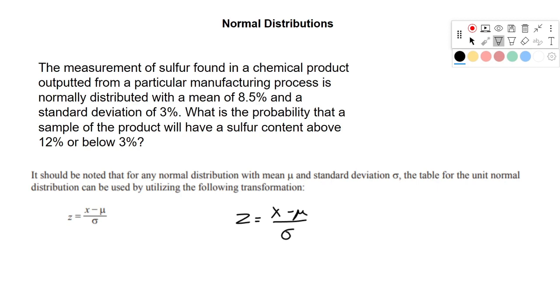So we're going to need two of these, right, because we have two z's. We have a z of 12. So in that case, x is 12 minus 8.5 over 3. And we need one for the 3 value, which is going to be 3 minus 8.5 over 3.